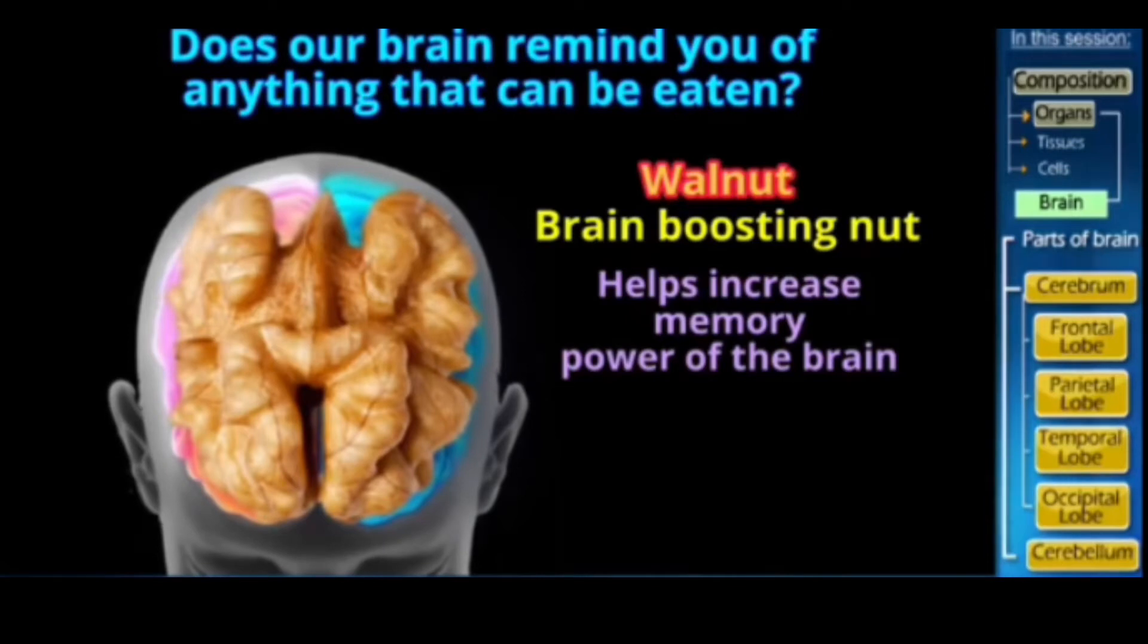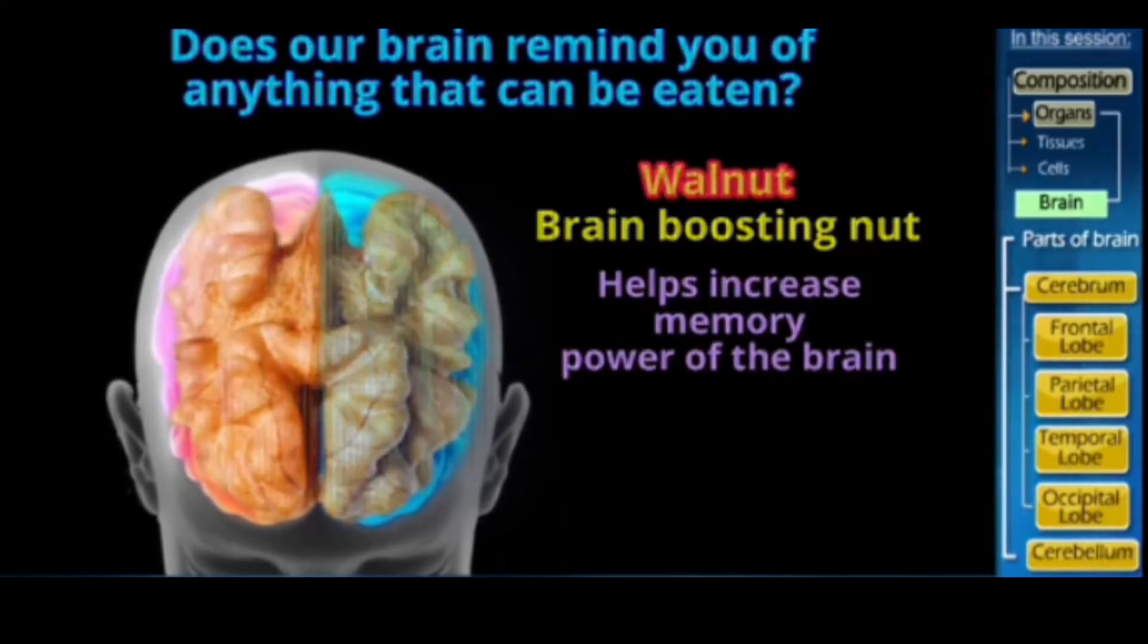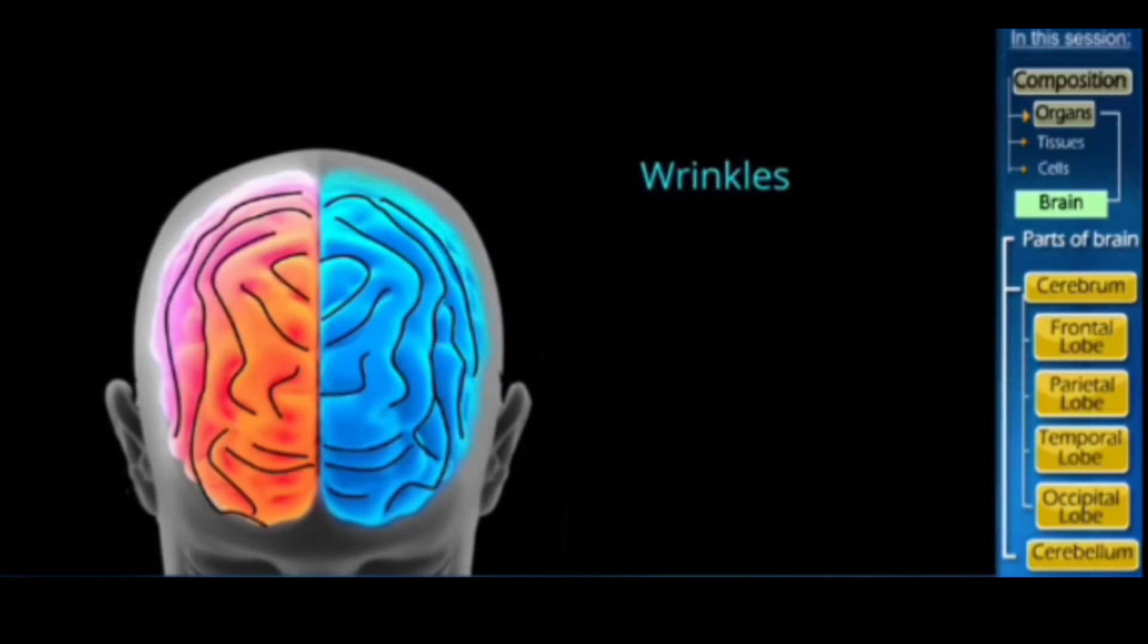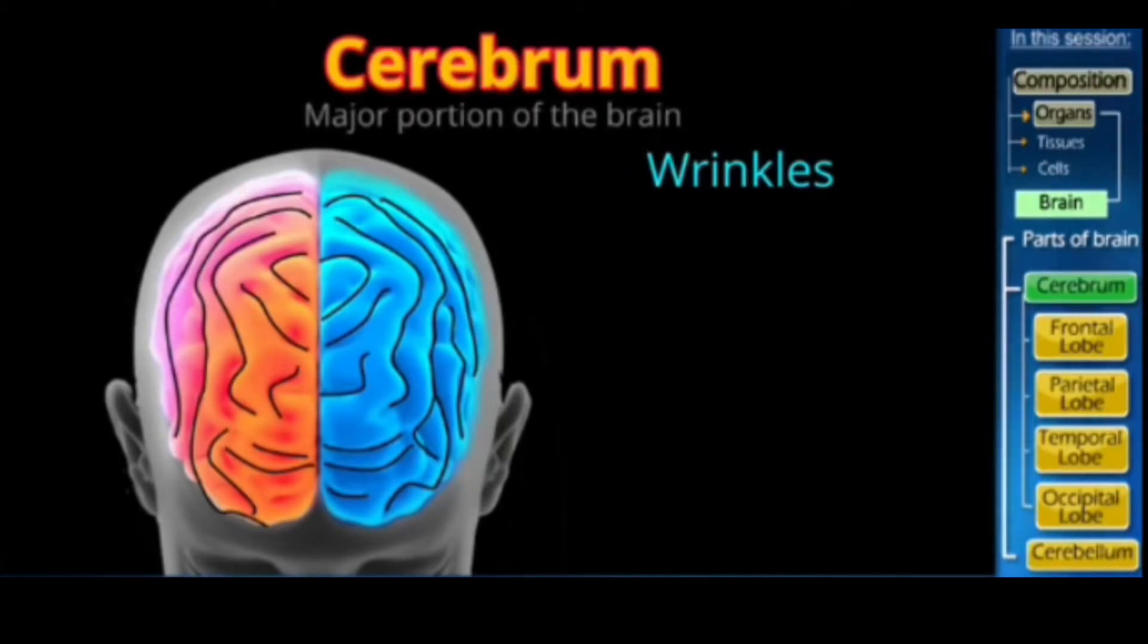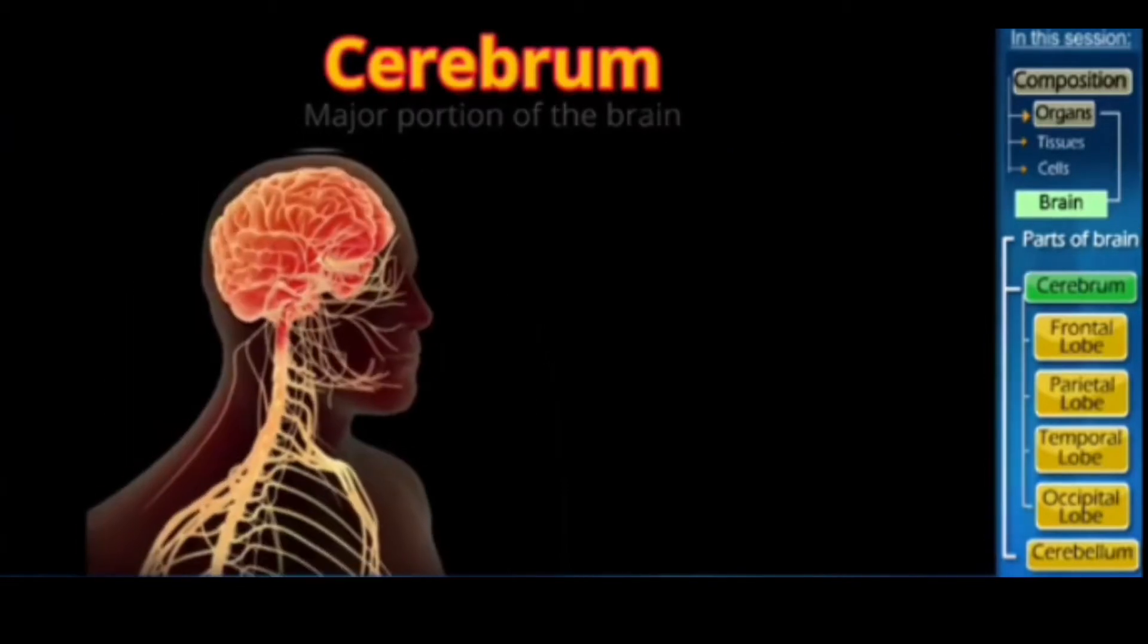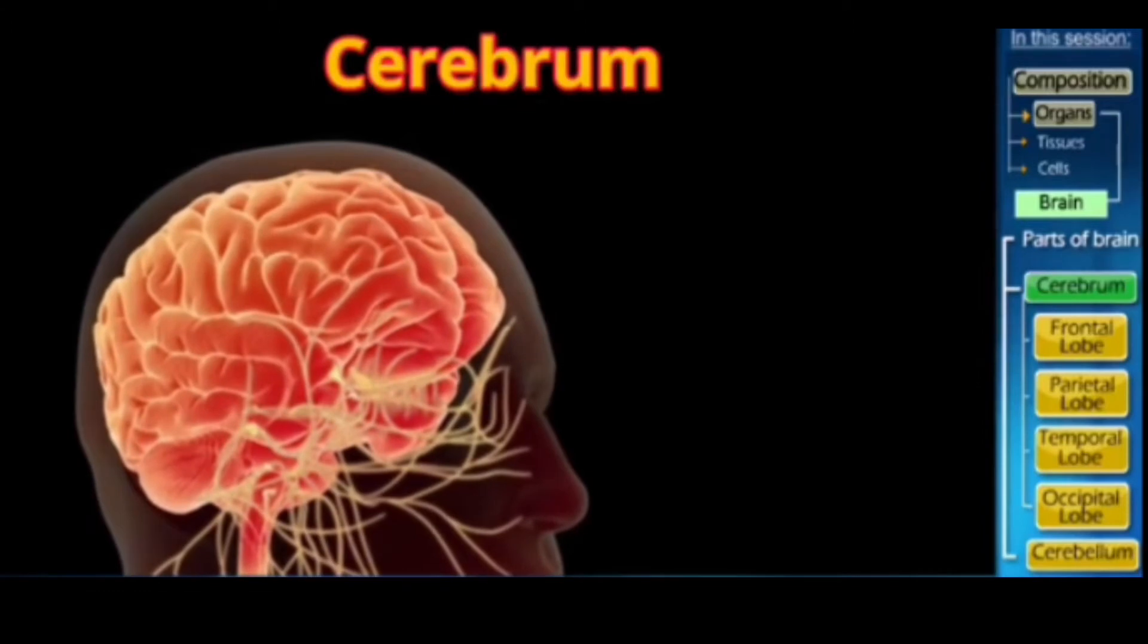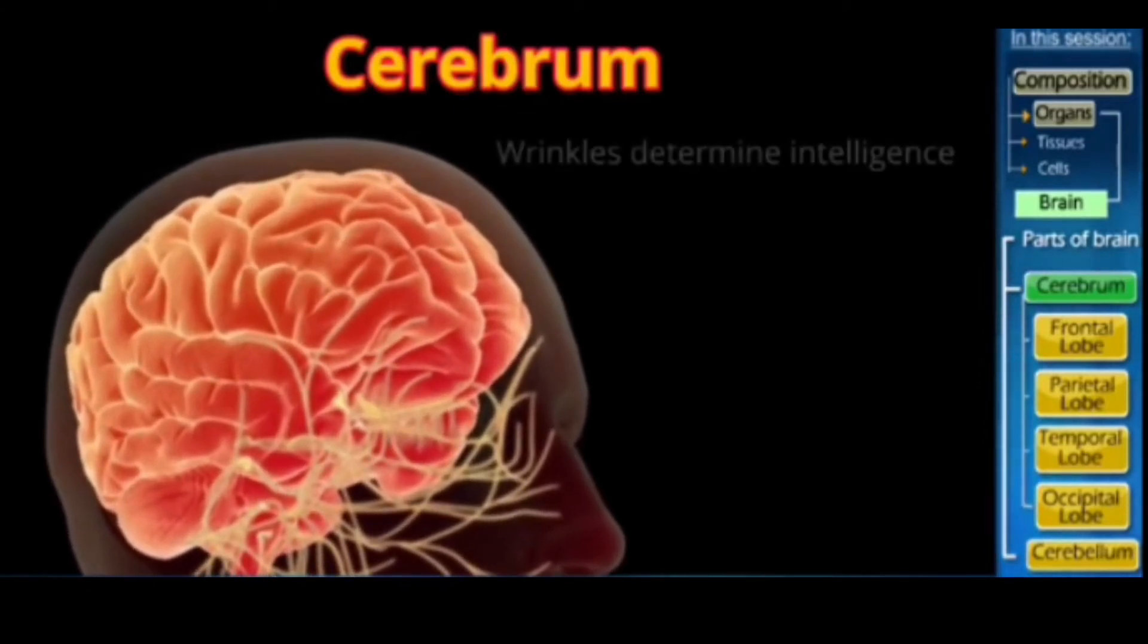You can see however brain has wrinkles on its exterior surface and this wrinkly part is called the cerebrum, which makes up the major portion of our brain. But not every individual has equal amount of wrinkles. These wrinkles indirectly determine the intelligence of an individual. You may be wondering how, so let me tell you the logic.